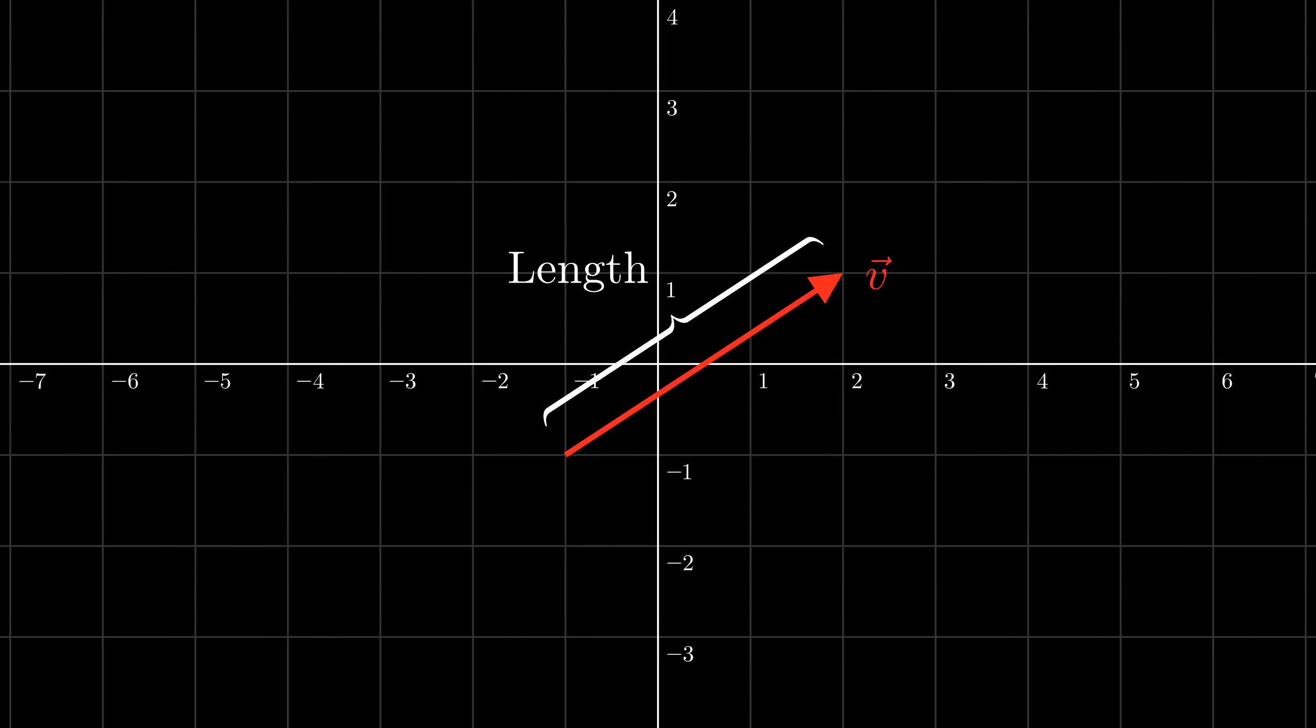So how do we find the length of a vector? We said that the length is represented by a positive number, but what number should it be? As it is, we currently don't have enough information to determine the length. The issue is that we have no units to work with.